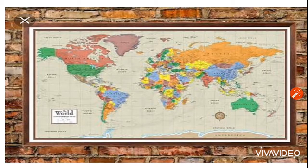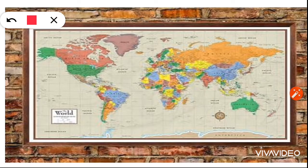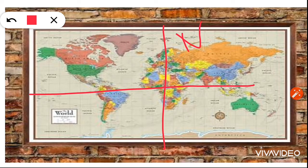Remember students, whenever a map is hung on the wall or is kept on the table, the top portion always shows the North and the bottom portion shows South. East is on your right side and West is on your left.